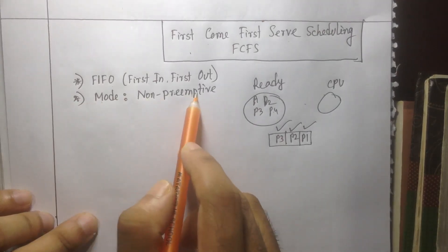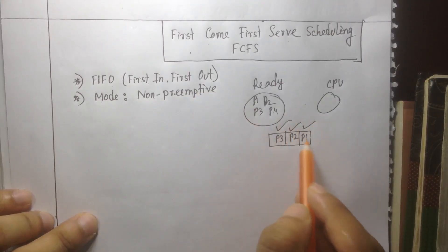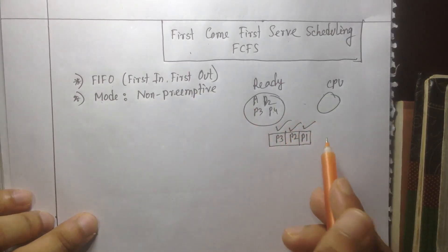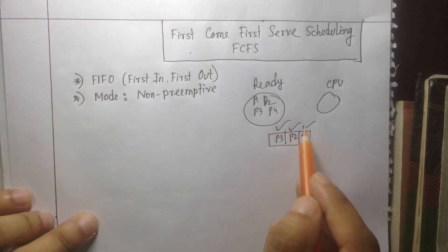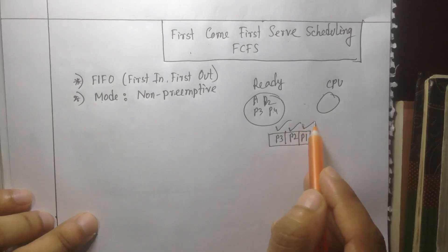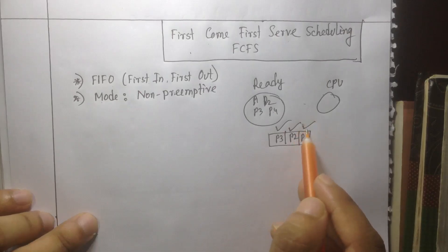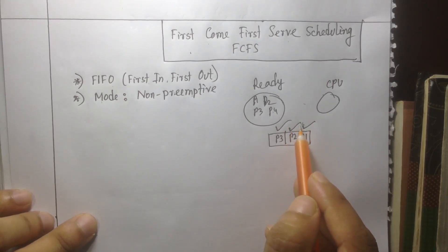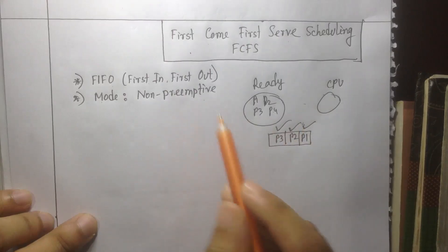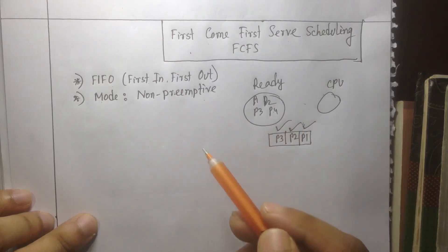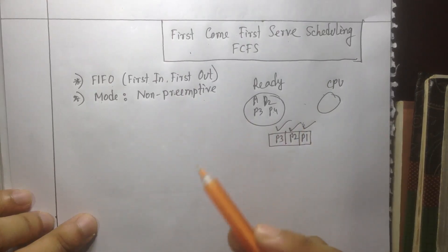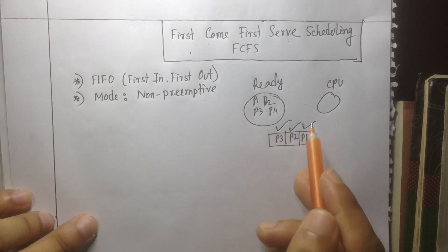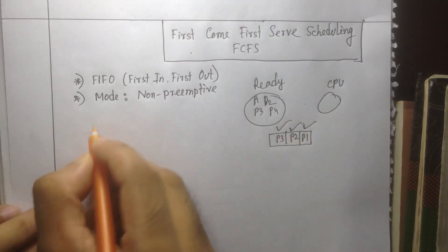What is non-preemptive? Non-preemptive means that once the CPU is assigned to a process, it is not released until that process completes. The CPU is not interrupted. This is non-preemptive — when you are working, the CPU is not interrupted. Let's see an example.